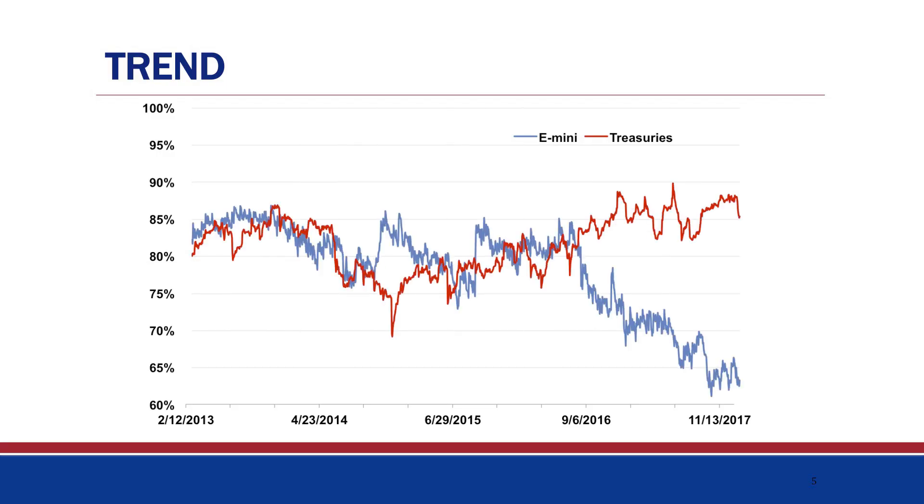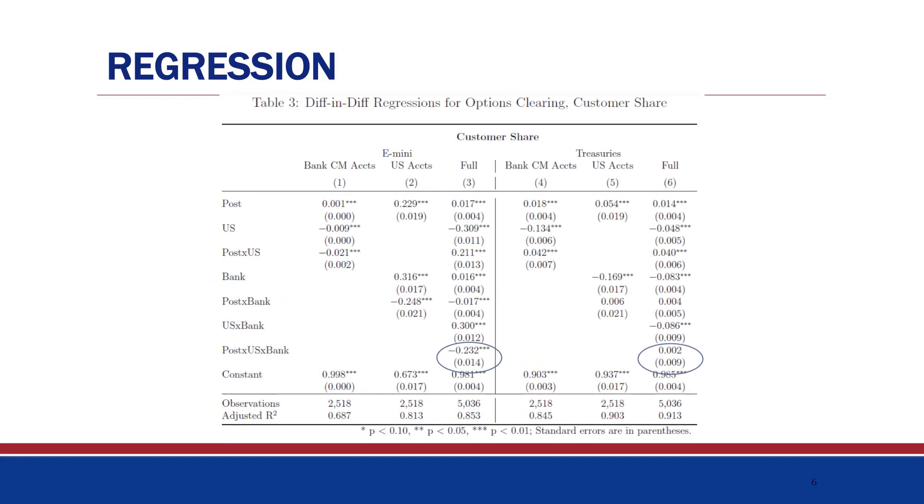None of those changes occurred for U.S. Treasury futures options clearing, where no capital charge is required. In fact, in recent years, U.S. banks were clearing an even larger share of treasury business than before. The blue line plots the percentage of U.S. clearing business done by banks for E-mini options, and the red line plots the percentage for treasury options. While the share of bank clearing fell dramatically over the time period for the E-mini contract, the share for treasuries slightly increased during the same time. These changes in E-mini clearing are statistically significant, as shown in these regressions.